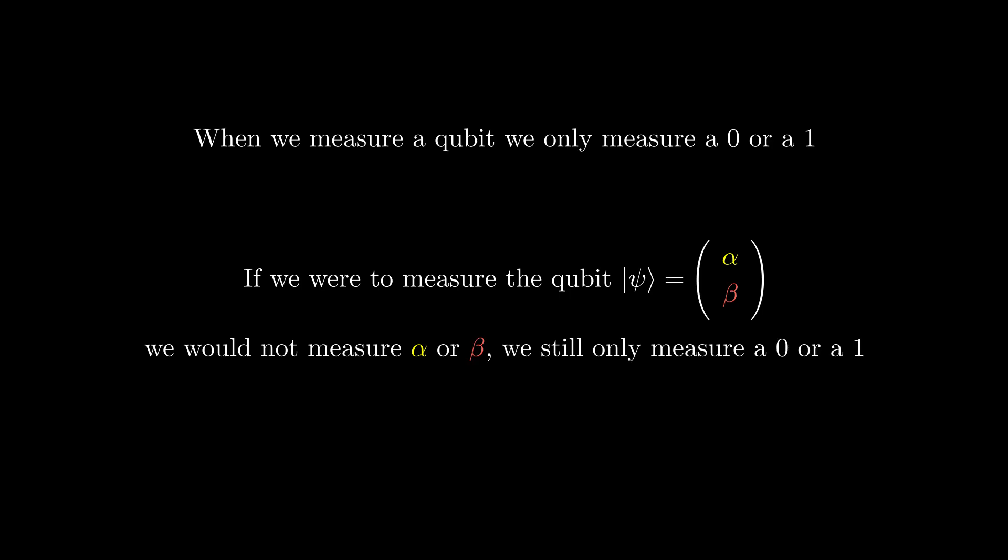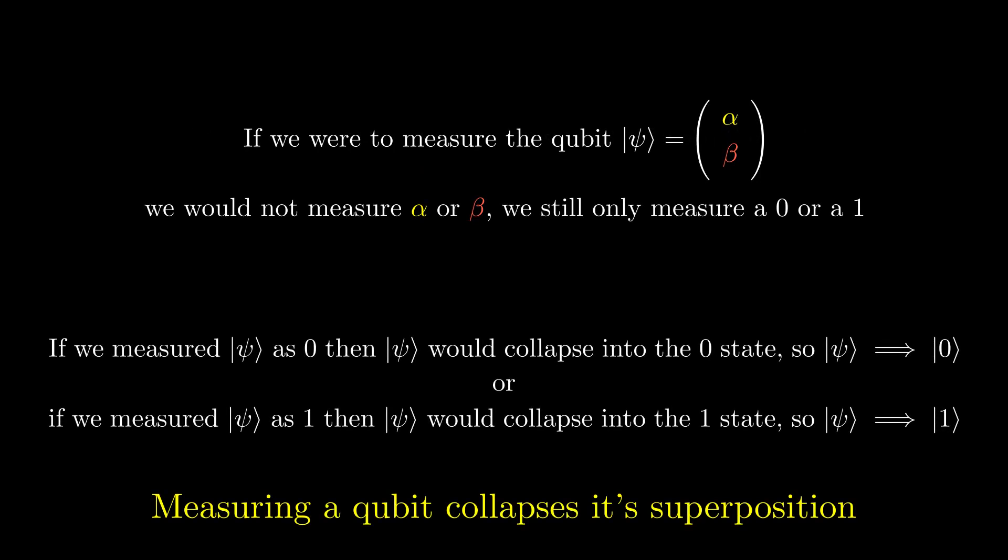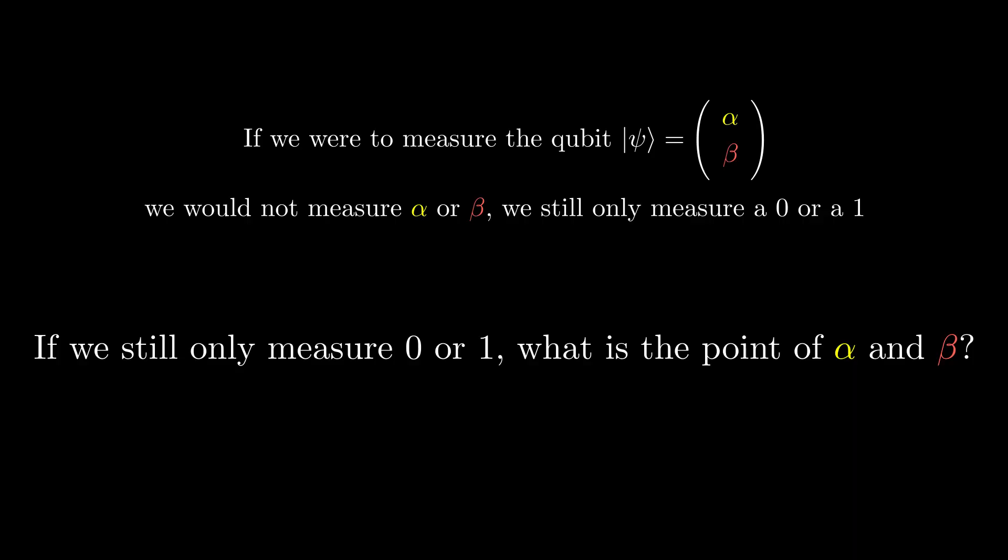Immediately after measuring a qubit, its state changes to either zero or one, depending on the measurement. So what is the point in those numbers telling us how much the qubit is in the zero state, or the one state?